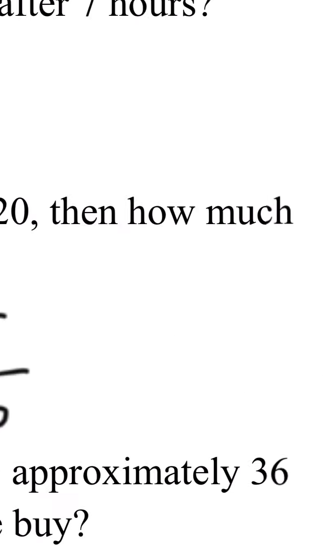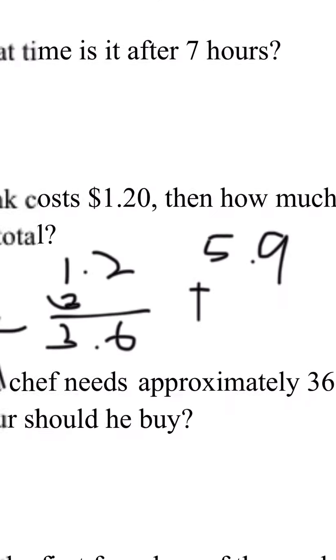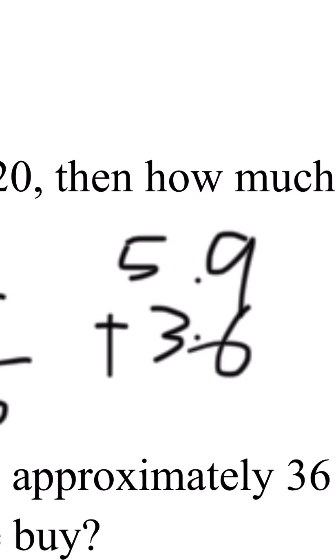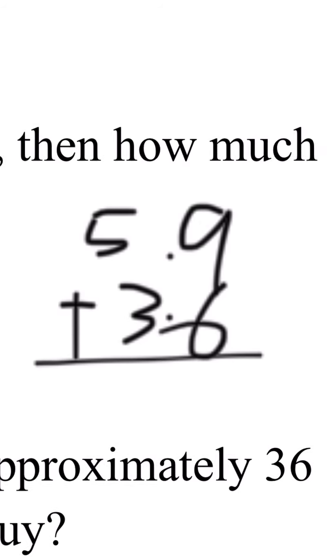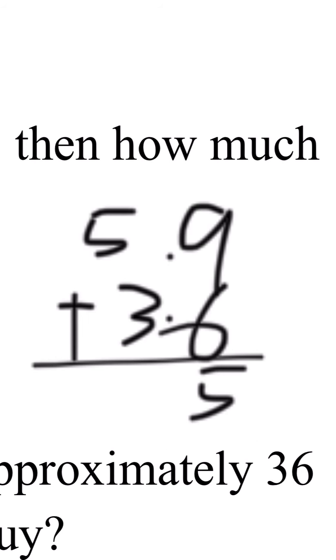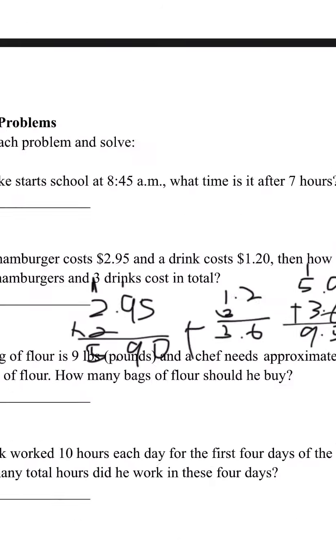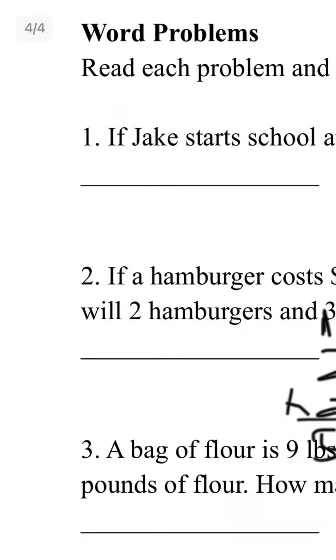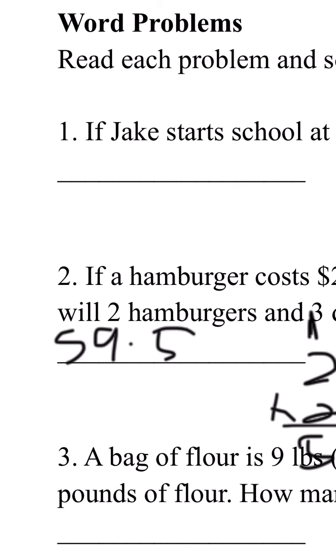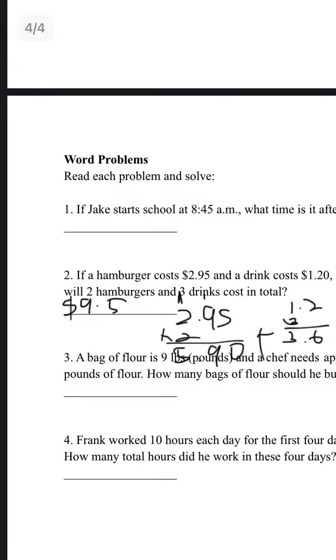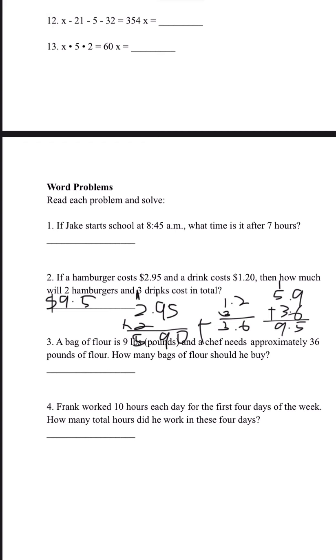We need to add these two numbers together: $5.90 plus $3.60. 9 plus 6 is 15. 1 plus 5 plus 3 is 9. The total cost of 2 hamburgers and 3 drinks is $9.50. Thanks for watching this video.